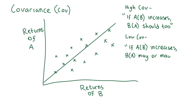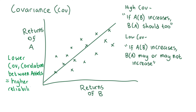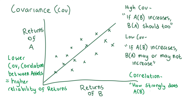A positive covariance means that asset returns move together, while a negative covariance means they move inversely. The lower the covariance between two assets, the lower their combined standard deviation, and therefore the lower the risk in achieving the weighted sum of their expected returns when we make a portfolio containing these two assets.